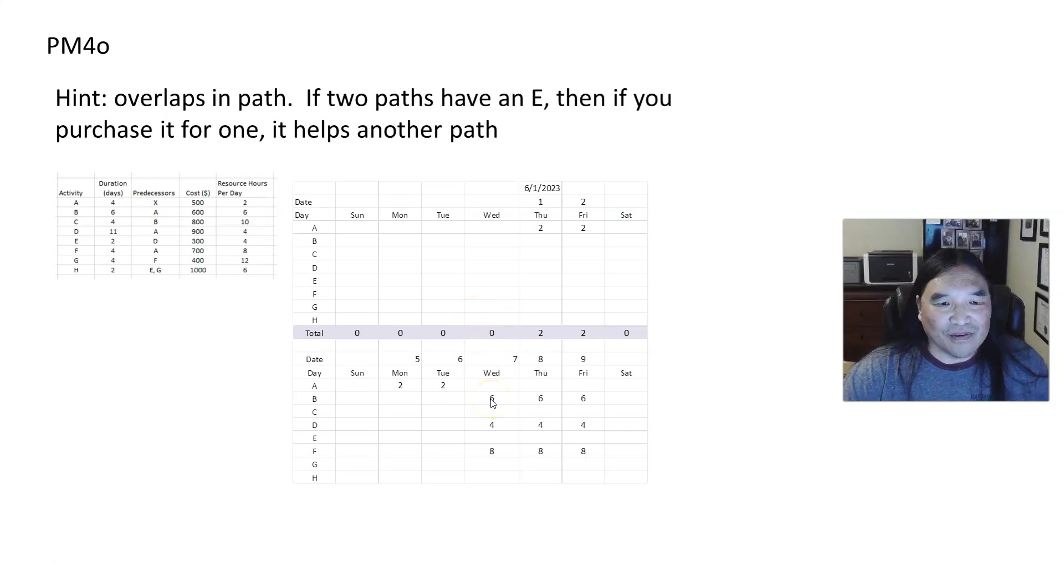But what it comes down to is that B, it tells you has a duration of six days and six resource hours. So it's six, six, six. And then if I had done this all the way, then it would show Monday six, Tuesday six, Wednesday six. So that's six days, six hours each. I cut it off here because, you know, I got to leave you some work to do.